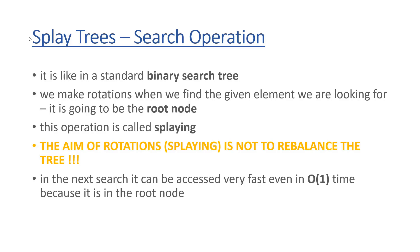After finding the item in the splay tree, we make rotations to ensure that the item we are looking for becomes the root node. This operation is called splaying. The tree-like structure is called a splay tree because after every operation — whether we insert or search for a given node — we perform the splaying operation, which means the item found or inserted becomes the root node. This is why splay trees rely heavily on rotations.